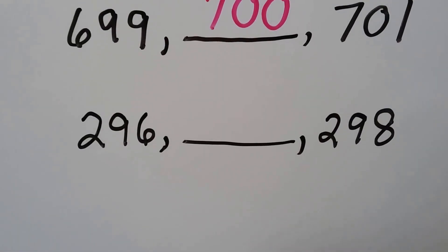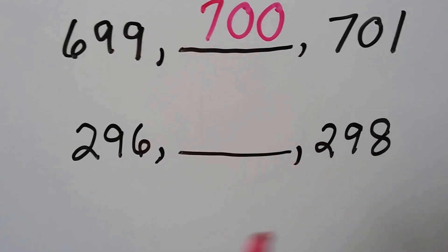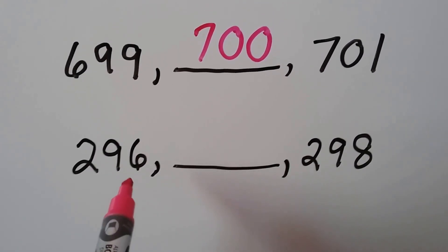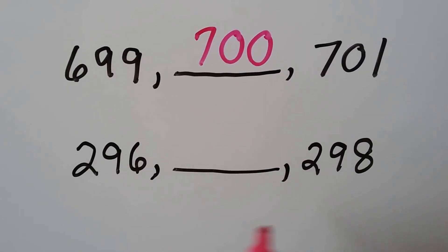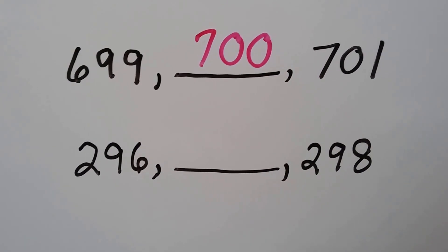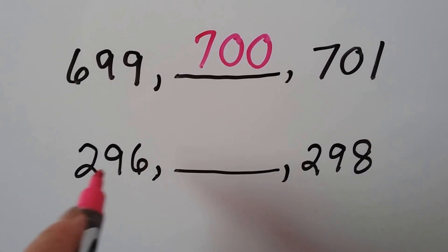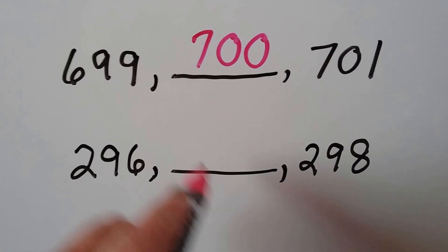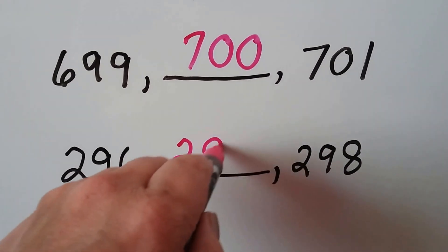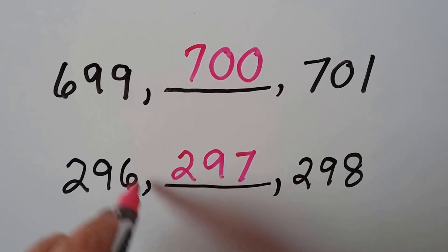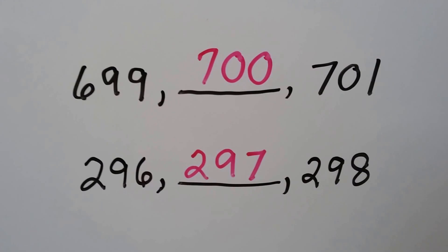What number comes in between 296 and 298? What number comes between a 6 and an 8 in the ones place? Well, 7. So because the hundreds and the tens are the same, we look at the ones, and we know it's 297.